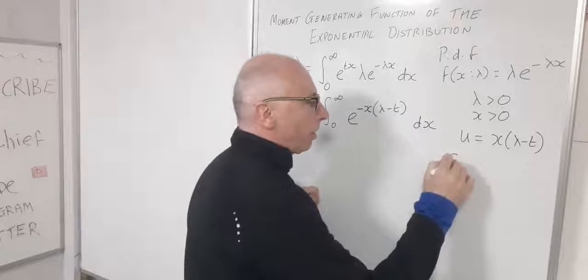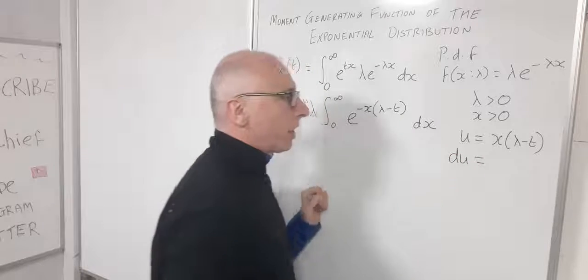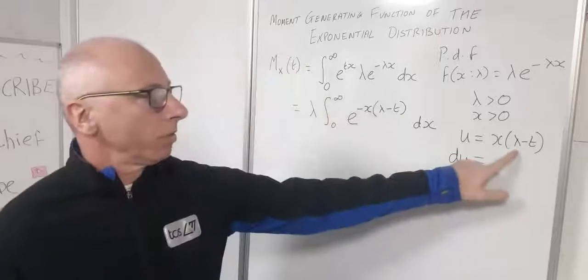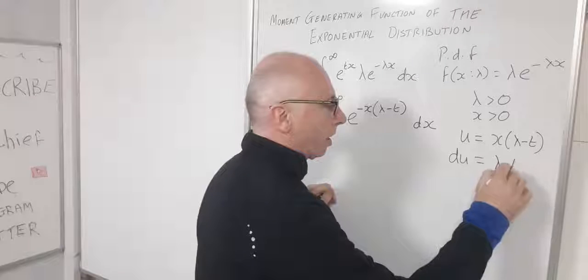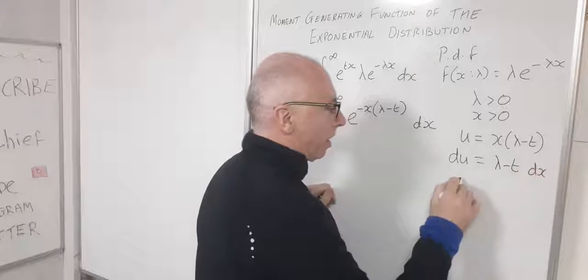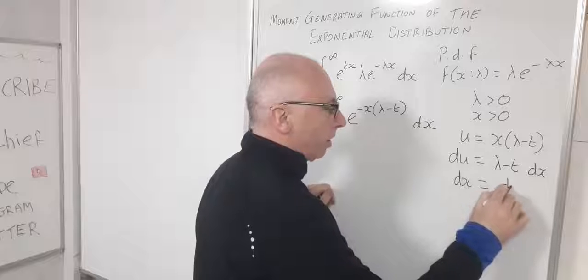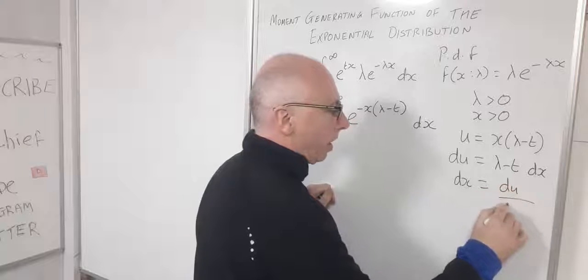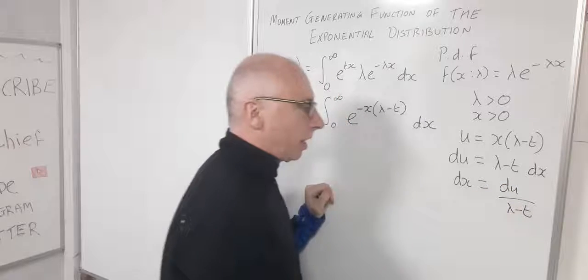Taking the derivative with respect to x gives du/dx = (λ − t), so dx = du / (λ − t).